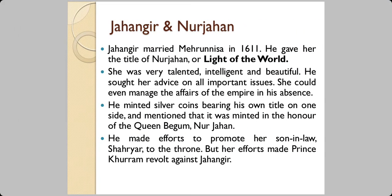He married a lady known as Mehrunissa in 1611, and he himself gave her the title of Noor Jahan, which means light of the world. She was very talented, intelligent, and beautiful. The emperor often sought the advice of his wife on important issues, and whenever Jahangir was absent, she was capable enough to handle the affairs of the empire. He also minted silver coins bearing his own title on one side, mentioning that it was in honour of his wife Noor Jahan.